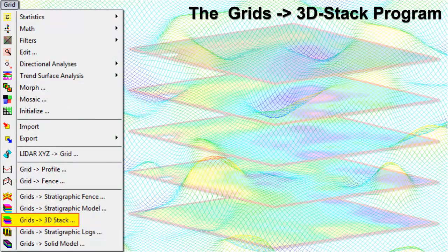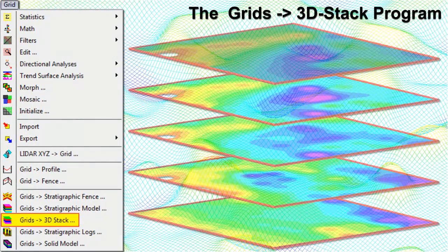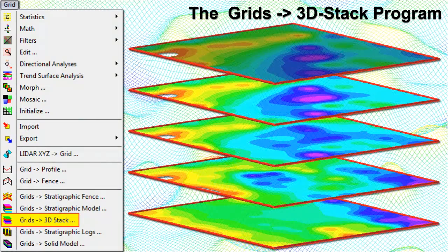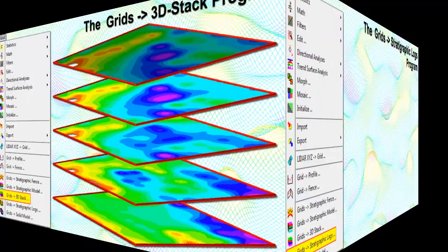The Grids to 3D Space program plots multiple flat grids in 3D space for the purpose of visual comparison. These grid models can represent any real number of values, such as geochemical concentrations, elevations, porosity values, quality readings, and more.